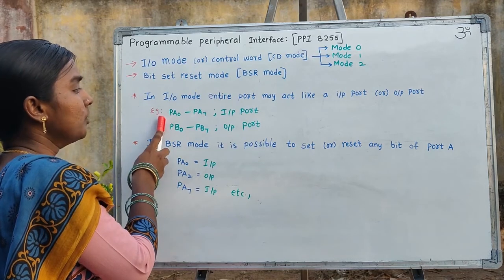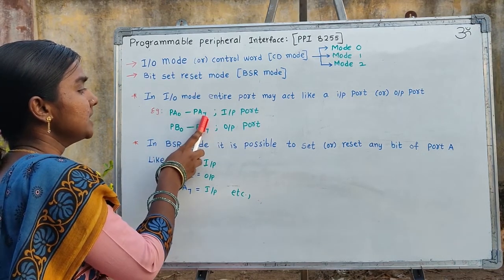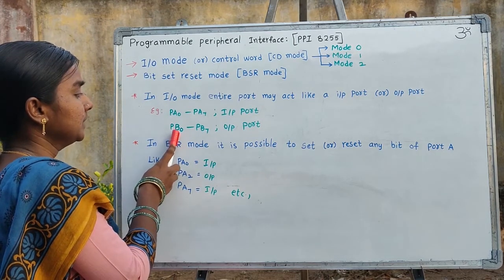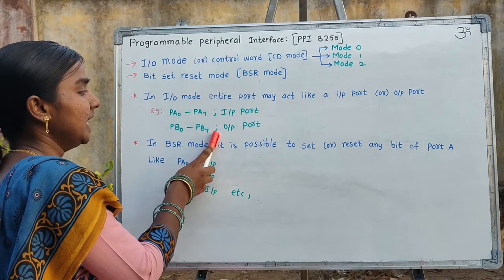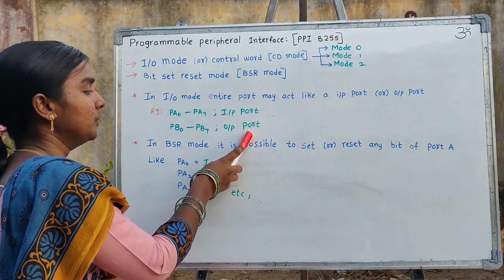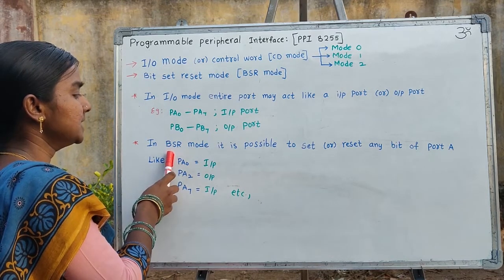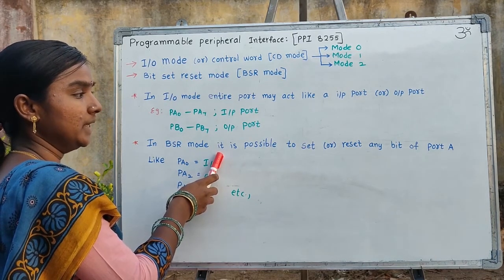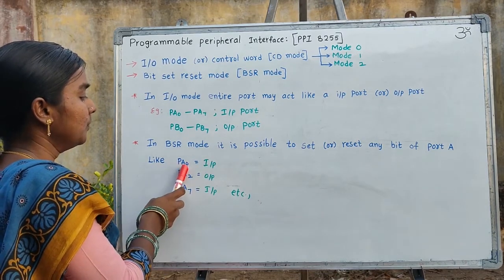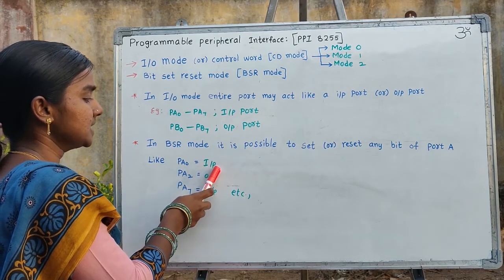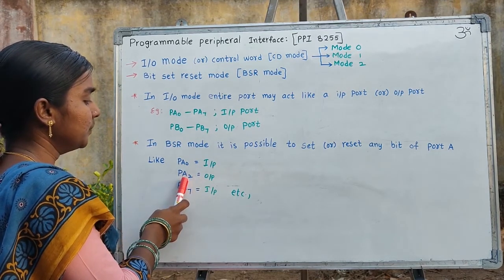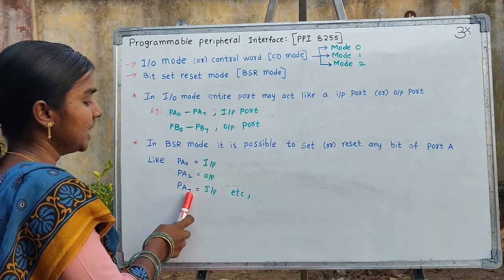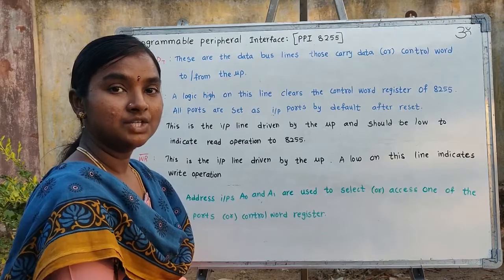For example, if I consider port PA, the lines PA0 to PA7 — these 8 lines will act as an input port. If I consider port B, the lines PB0 to PB7 — these 8 lines will act as an output port. In BSR mode — Bit Set Reset mode — it is possible to set or reset any bit of port A, port B, or port C. For example, PA0 may be an input line, PA2 may be an output line, and PA7 may also be an input line.